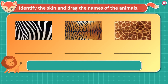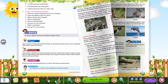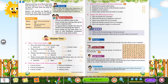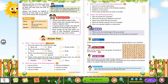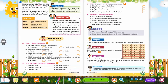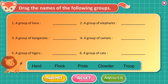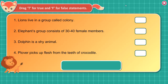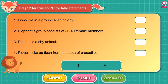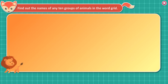Activity: Identify the skin and drag the names of the animals. Tick the correct option. Drag the names of the following groups. Drag T for true and F for false statements. Fun time: find out the names of any 10 groups of animals in the word grid.